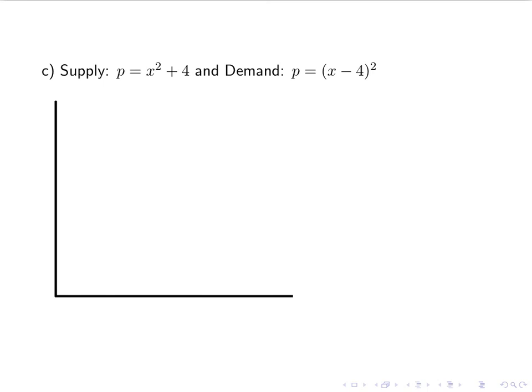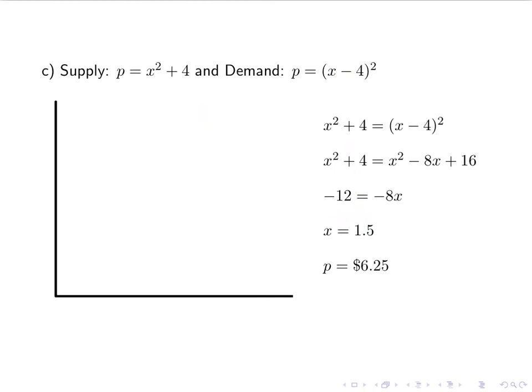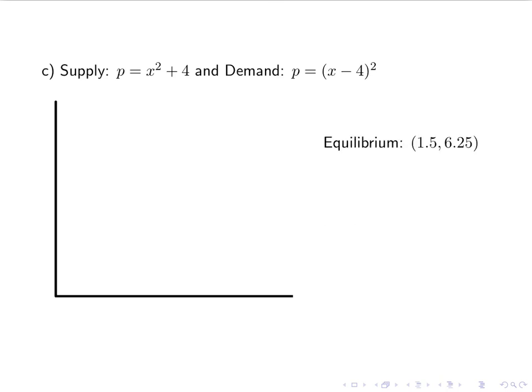Let's try one more. Supply is p equals x squared plus 4, demand is p equals x minus 4 squared. Setting them equal to find equilibrium: squaring out x minus 4 gives x squared minus 8x plus 16. The x squareds cancel. Moving the 16 over leaves negative 12 equals negative 8x. Dividing both sides by negative 8 gives x equals 1.5. Plugging that into one of the equations should give $6.25. So the equilibrium point is 1.5, 6.25.